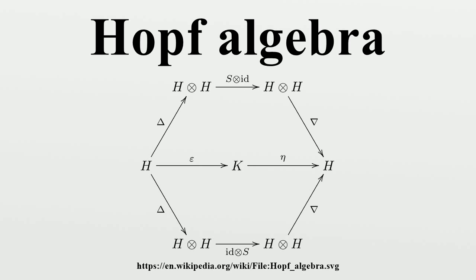In general, S is an anti-homomorphism, so S² is a homomorphism, which is therefore an automorphism if S was invertible. If S² equals id_H, then the Hopf algebra is said to be involutive. If H is finite-dimensional semi-simple over a field of characteristic 0, commutative, or co-commutative, then it is involutive.